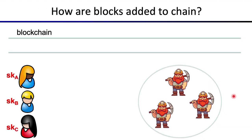Let's quickly take a look at how blocks are added to the blockchain, which will illustrate how the consensus mechanism works in practice. We have our set of participants: let's call them Alice, Bob, and Carol. Each one of them has a secret key they're going to use to sign transactions. We'll see how digital signatures work later in the lecture, but for now just think of these as secret keys used to authorize transactions.